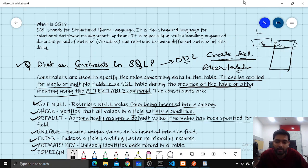UNIQUE constraint ensures that unique values are inserted in that field. Indexes provide faster retrieval of records from the database or from the tables.